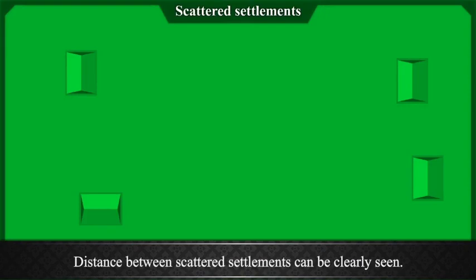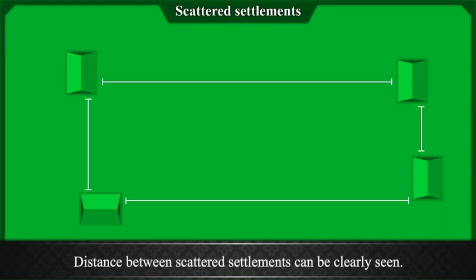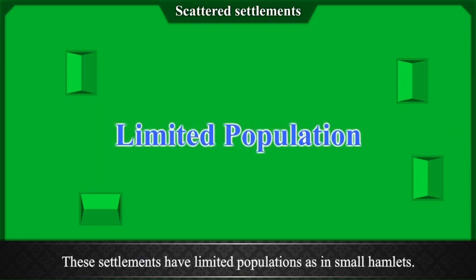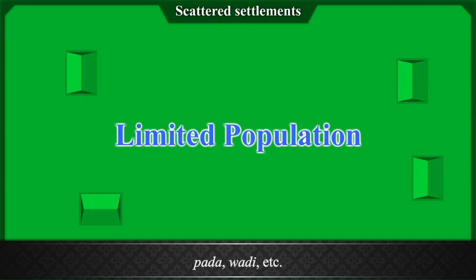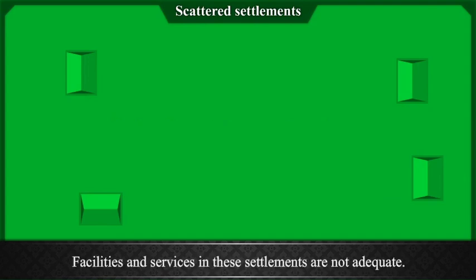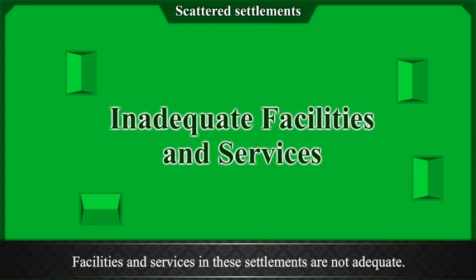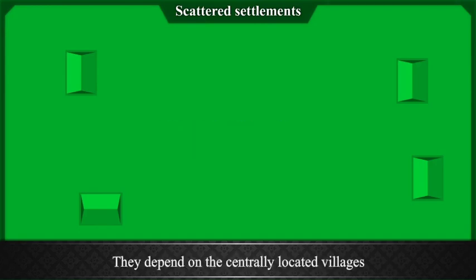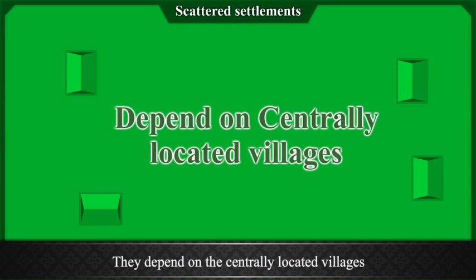Characteristics of scattered settlements: The distance between scattered settlements can be clearly seen. These settlements have limited populations, as in small hamlets such as Padha and Wadi. Facilities and services in these settlements are not adequate. As these settlements are closer to nature, they are free from pollution. They depend on centrally located villages for their day-to-day requirements.